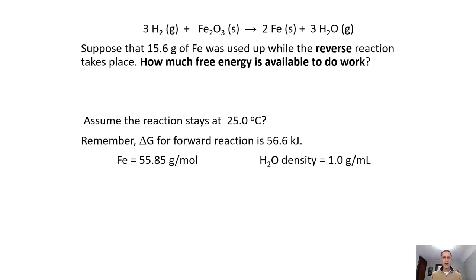We can go one step further and link this back to stoichiometry. We know the reverse of the iron oxide reaction would be spontaneous at room temperature, and spontaneous reactions can be used to do work. So we might be curious: how much free energy is available to do work if we have 15.6 grams of iron reacting with water at 25 degrees Celsius? Remember, delta G for the forward reaction was 56.6 kilojoules — so give that a shot, and we'll pick up with it in class. To be continued!